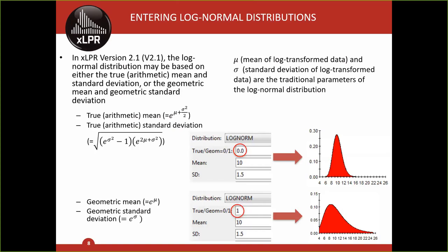Instead, GoldSIM defines the log normal distribution either based on the true arithmetic mean and standard deviation, or the geometric mean and standard deviation. In the XLPR input set, there's a flag with a value of zero or one that selects whether the true arithmetic or geometric mean and standard deviations are input to define the log normal distribution. The slide shows how the true arithmetic or geometric mean and standard deviation can be calculated from the more classical log mu and log sigma. The figures on the right show how the probability density function for a log normal distribution changes if you switch from true to geometric while leaving the mean and standard deviation inputs unchanged.